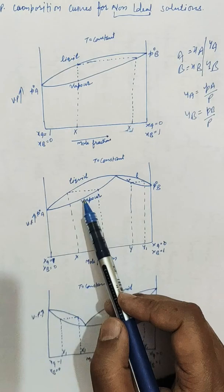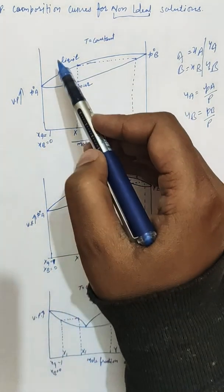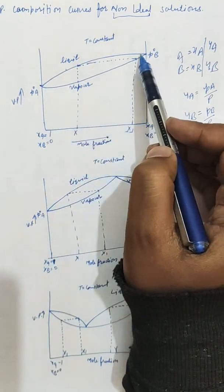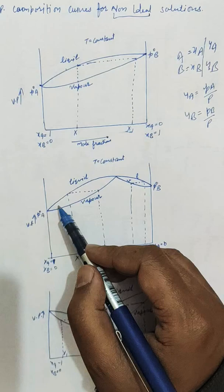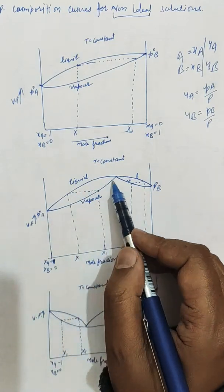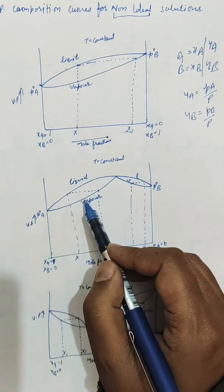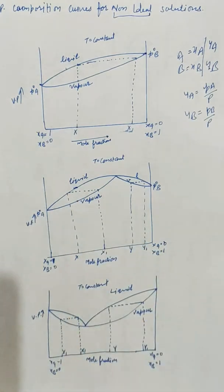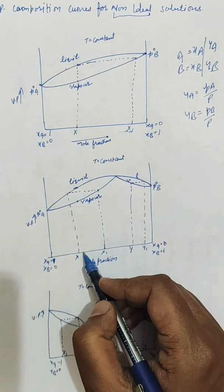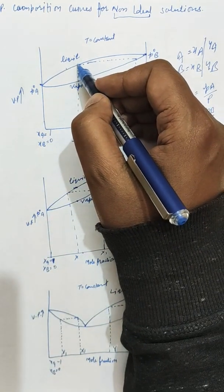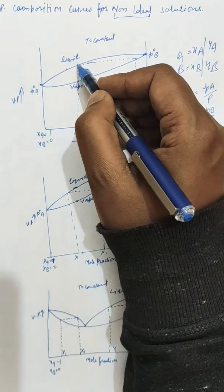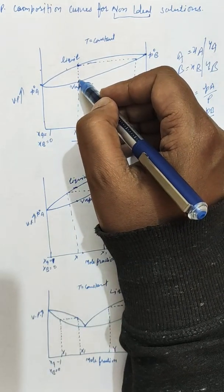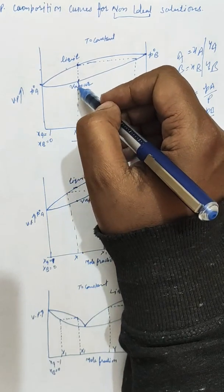Above the liquid curve, exclusively liquid phase is present. Below the vapor curve, exclusively vapor phase is present. Between these two curves — that is, between two particular vapor pressure values — both liquid and vapor phases are present simultaneously at a given composition.